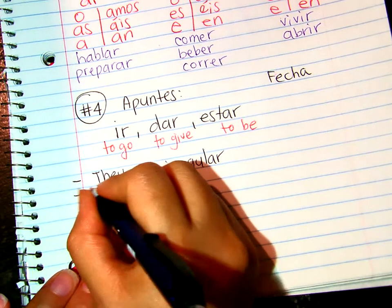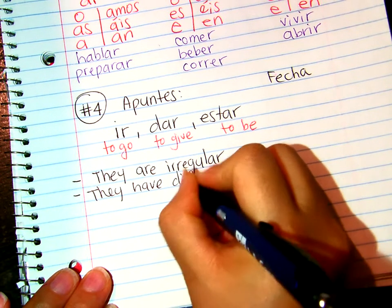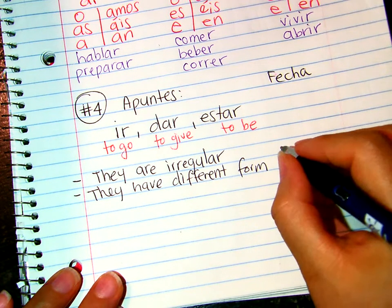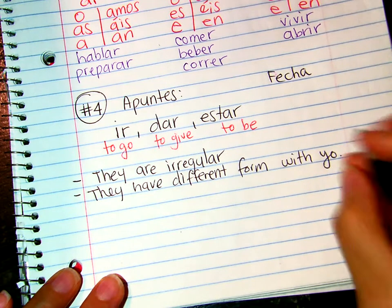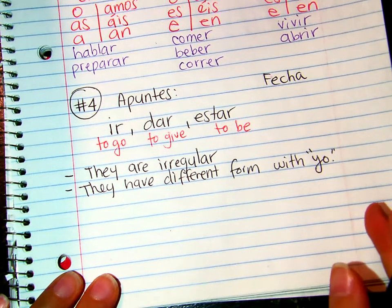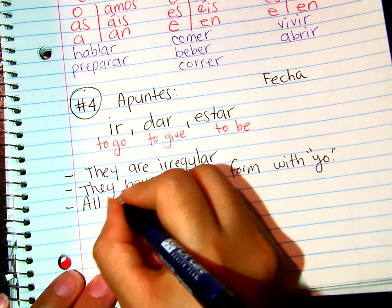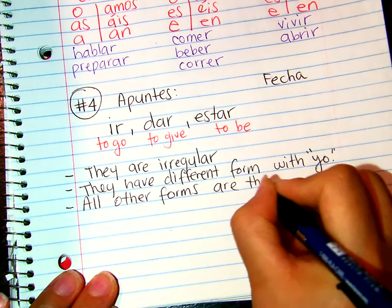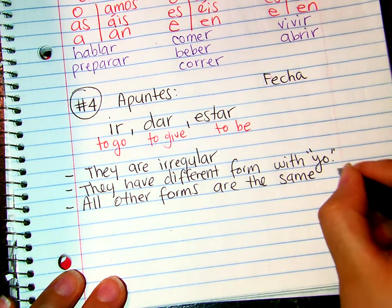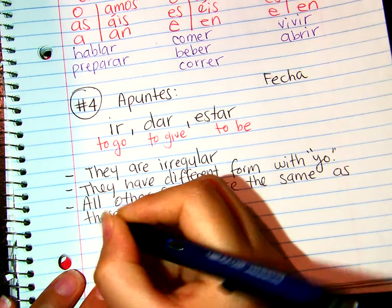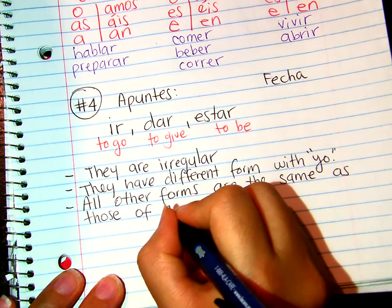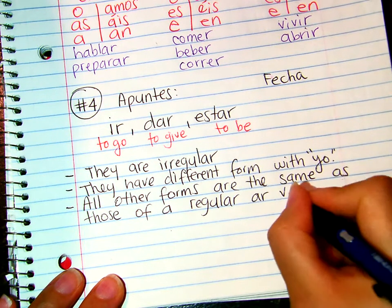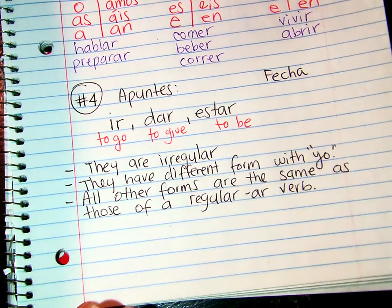They have different forms in the yo form — the first person. All of the other forms are the same as those of a regular AR ending verb.